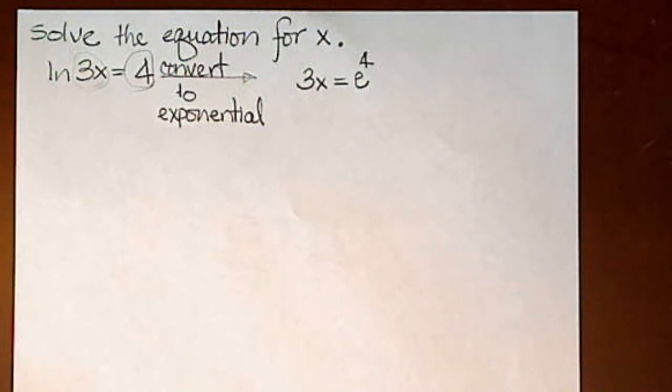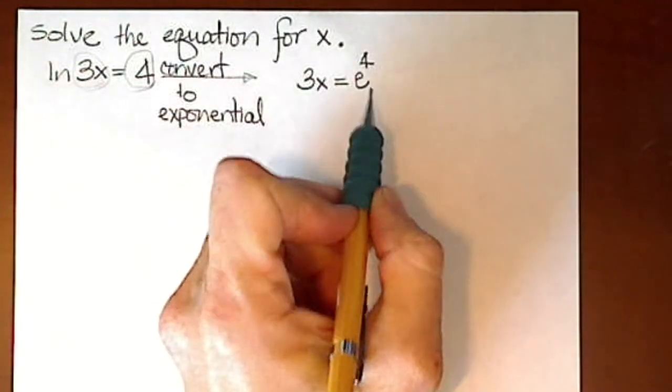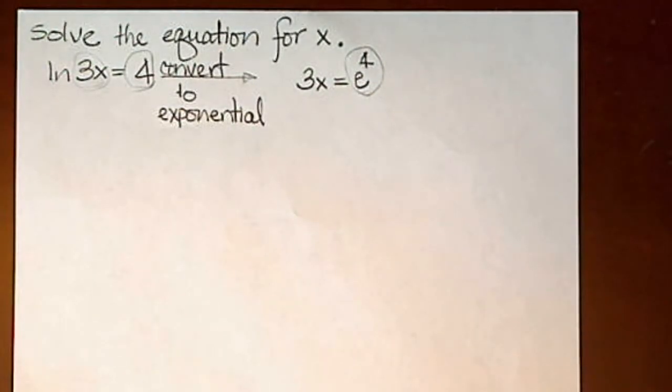Now we see that e to the fourth is basically a constant, so we have a linear equation.